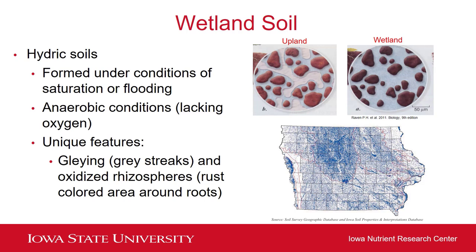Because of these anaerobic conditions, you tend to see some unique features in wetland soils. These can include gleying or gray streaks — blue-gray streaks within wetland soil. You can also have the formation of oxidized rhizospheres, which are rust-colored red areas around roots that develop when oxygen leaks out of those roots and interacts with the iron in the soil. If you look at the lower right-hand side of the slide, you can see a map of Iowa with many blue areas — all areas of hydric soil within Iowa. This doesn't mean there's currently a wetland on site; it just means that at some point in the past, there's been either a wetland or aquatic habitat in those areas.